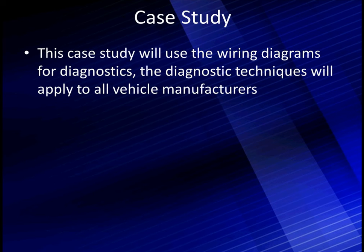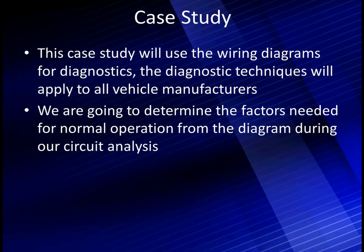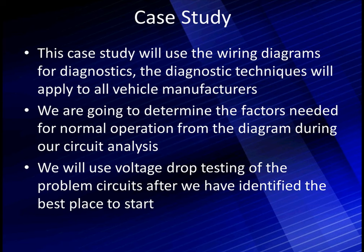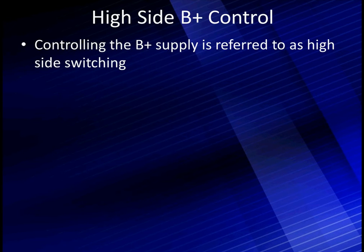For the case study, we're going to use the wiring diagrams for our diagnostics — the same wiring diagrams you're going to use. The diagnostic techniques will apply to all vehicle manufacturers, even though we're working on a Jeep-Chrysler diagram. We're going to determine the factors needed for normal operation from the diagrams during the circuit analysis. Remember, this is one of our first attributes we have to look for. We're going to use voltage drop testing of the problem circuits — the ones indicated by the best place to start, by the pattern analysis. We're going to separate out the diagnostics of the pattern analysis to a separate chapter so you can easily go back and recognize it.